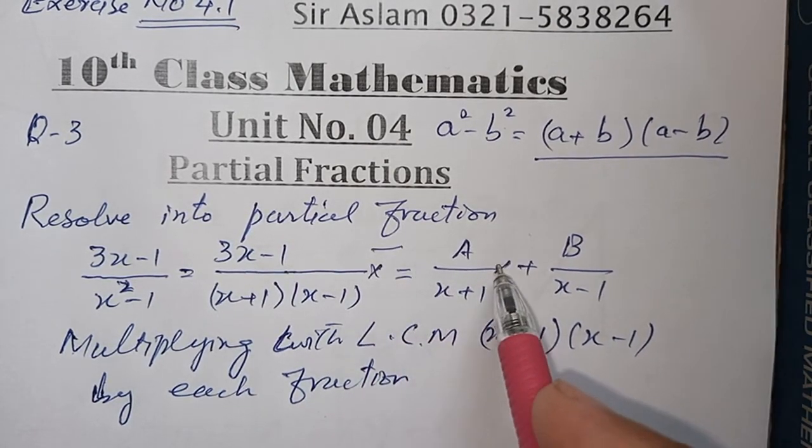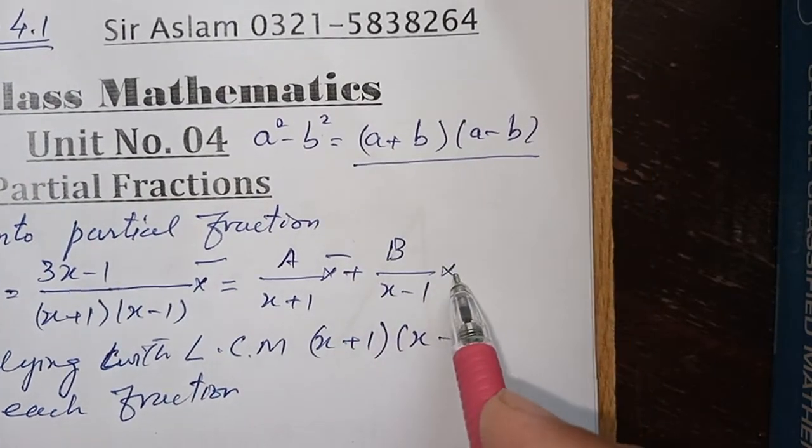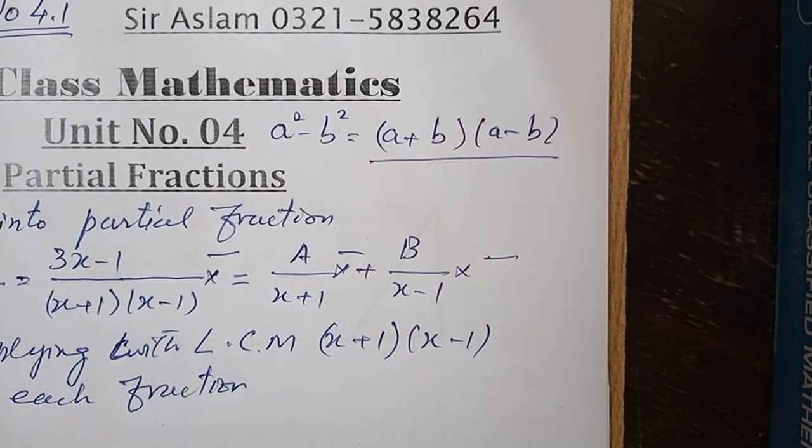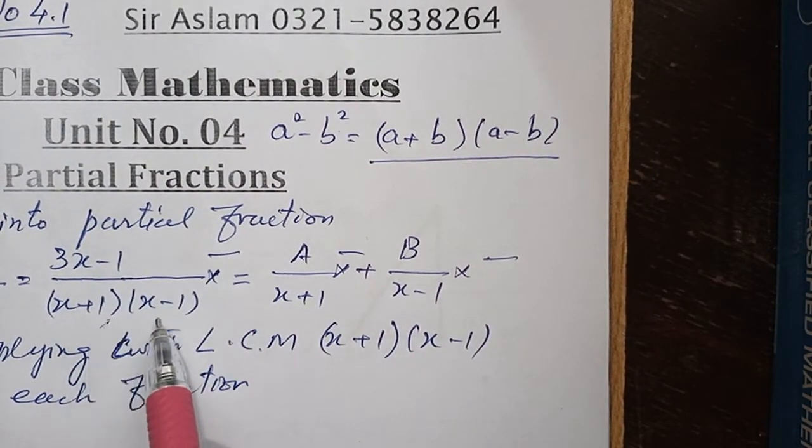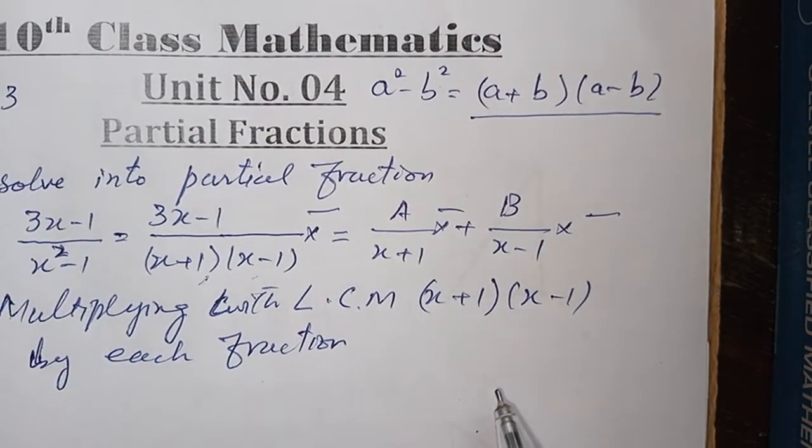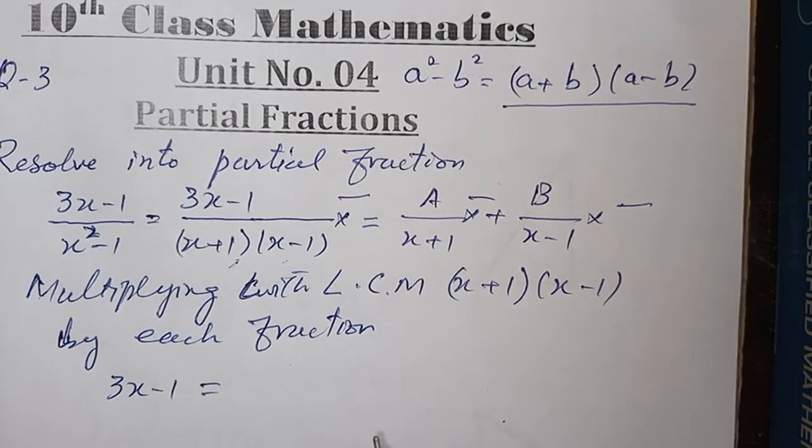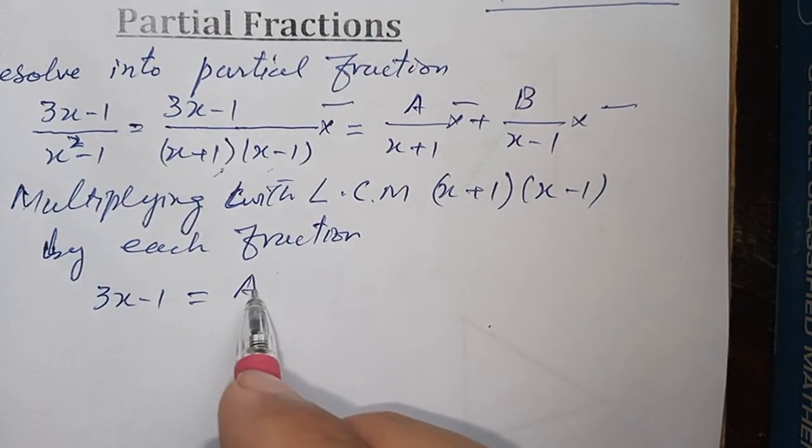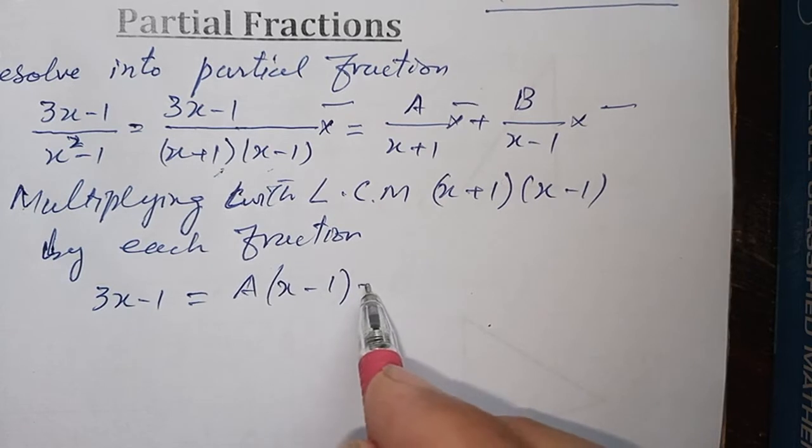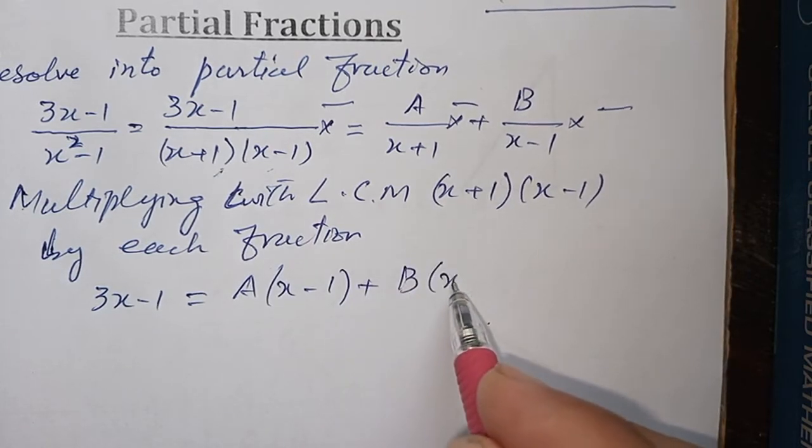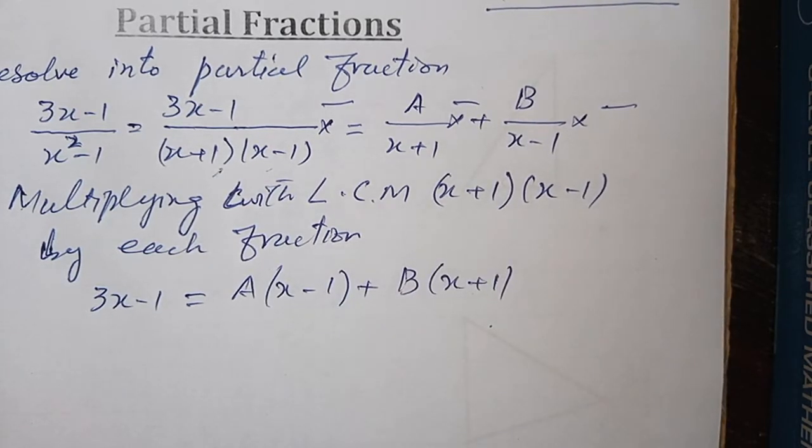यहां पर भी multiply करेंगे, A के साथ भी होगा, इस fraction के साथ भी होगा. यहां पर LCM total (x+1)(x-1) के साथ cancel हो जाएगा, बचेगा upper 3x-1. This is equal to: A के साथ (x-1) होगा और B के साथ (x+1) होगा. यह मैंने multiply करके जो simplest answer आया है वो मैंने आप दोनों के लिए लिख दिया है.